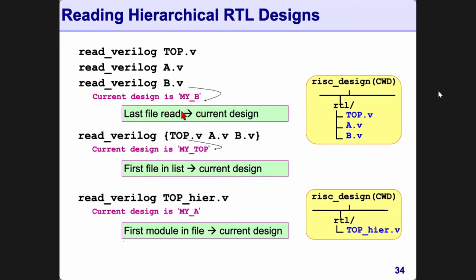The last design read in is the current design. Or you can read them all in one command using double quotes or curly braces: top.v, a.v, b.v, and so on. If you read this way, the first file DC finds — and the first module in it — becomes the current design, so at least these are different current design behaviors.